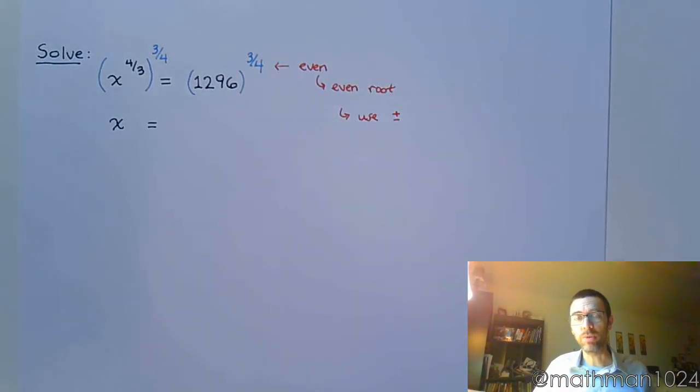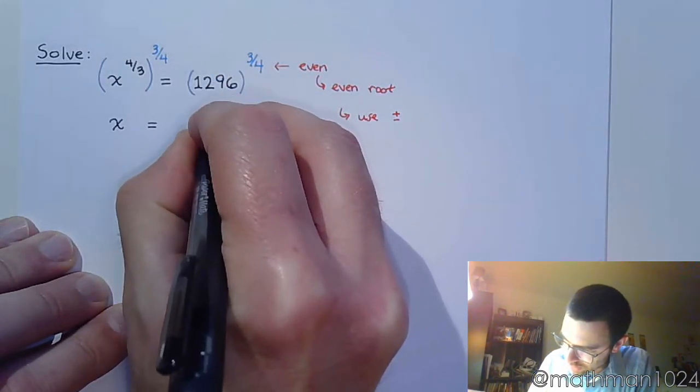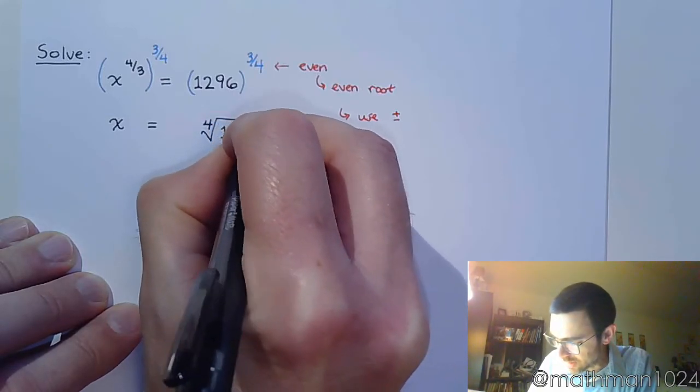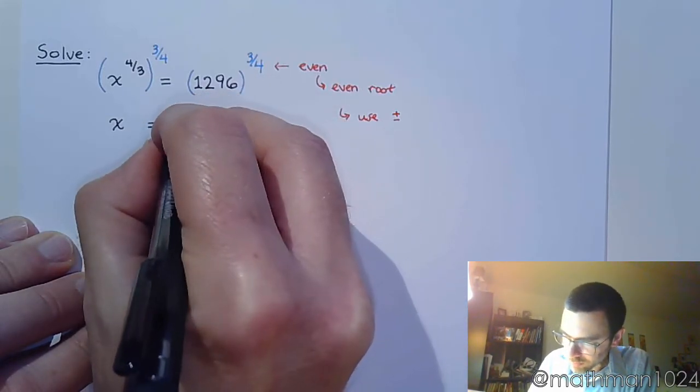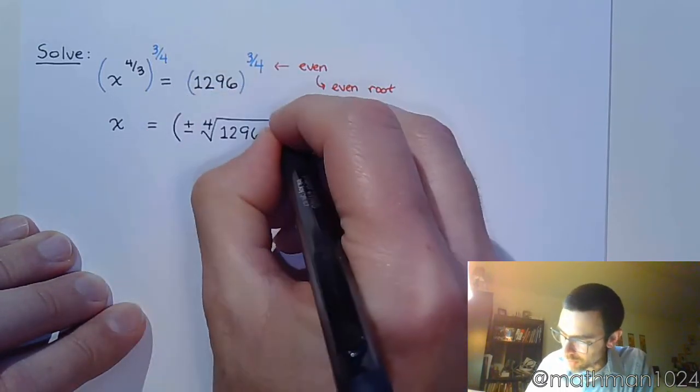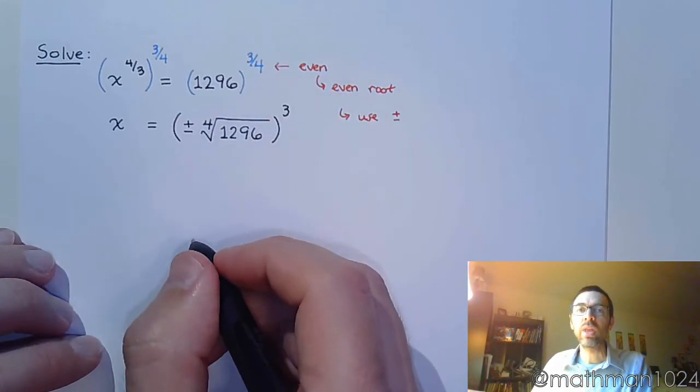Because of its connection to the square root property, when you take an even root on both sides, plus or minus has to come into play. So even though I'm going to write the fourth root of 1296, I'm also going to do plus or minus, and then I'm going to raise all of this to the third power.